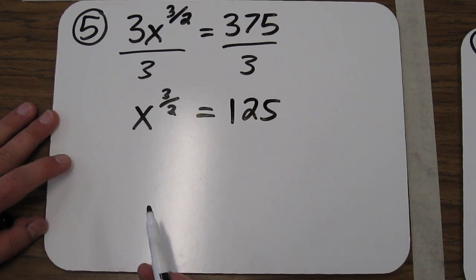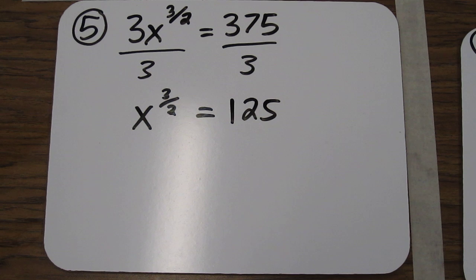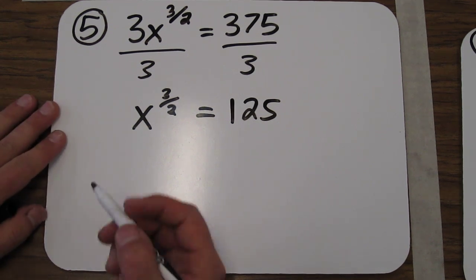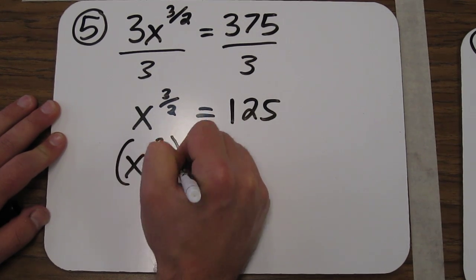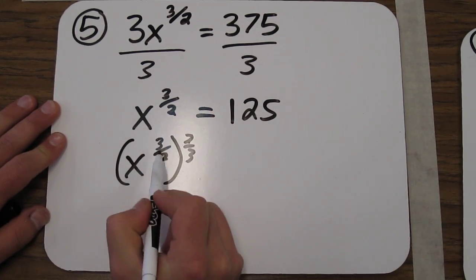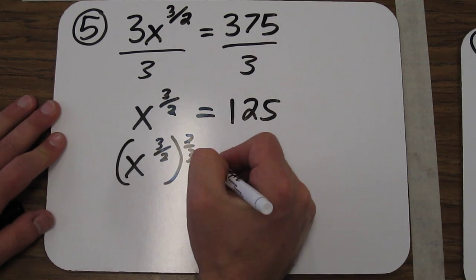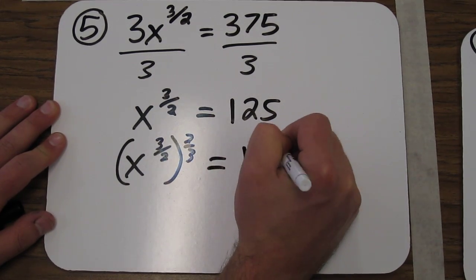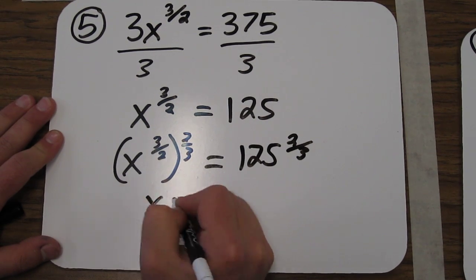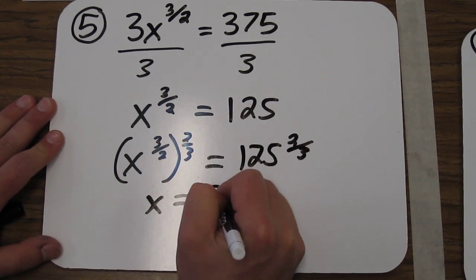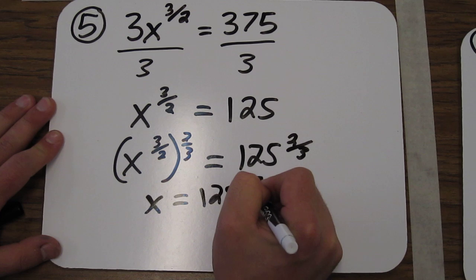So x to the 3/2, we want the exponent to be 1. So we should raise each side to the 2/3 power. Because 3/2 times 2/3 is 1. So now we know that x equals 125 to the 2/3 power.